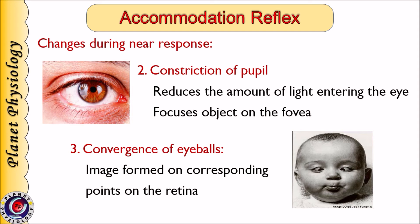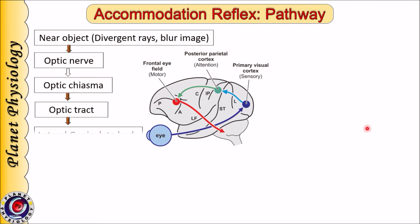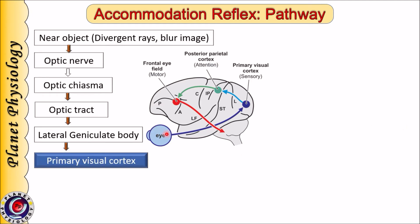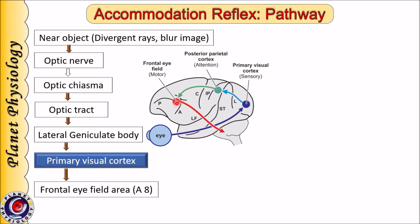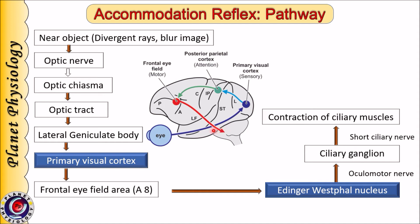Now let us study the pathway for accommodation. Rays from nearer objects are divergent and hence form a blurred image on the retina. This signal travels along the optic pathway to the primary visual cortex — the usual optic pathway: optic nerve, optic chiasma, optic tract, lateral geniculate body, then to primary visual cortex (area 17). From the primary visual cortex, impulses are sent to the frontal eye field, that is Brodmann's area 8. Signals from area 8 are transmitted to the Edinger-Westphal nucleus in the midbrain.